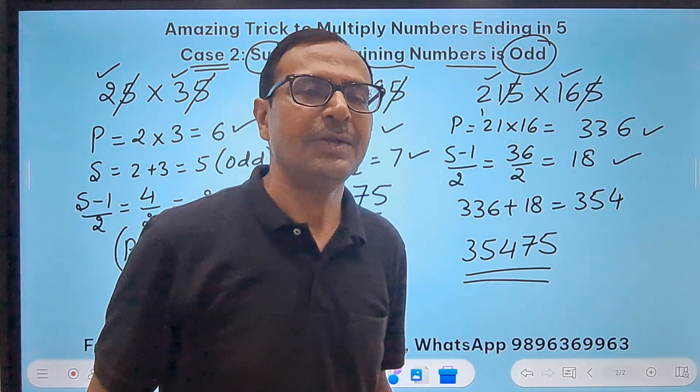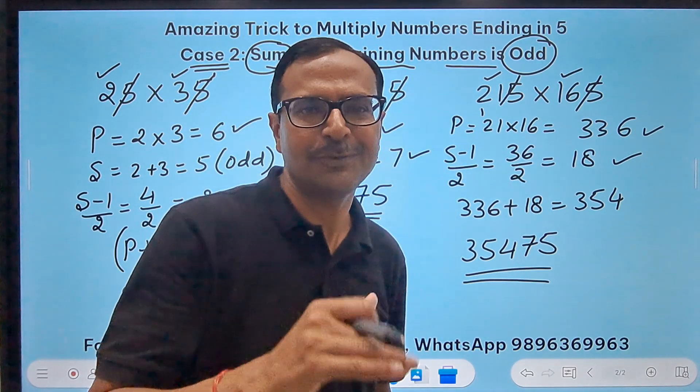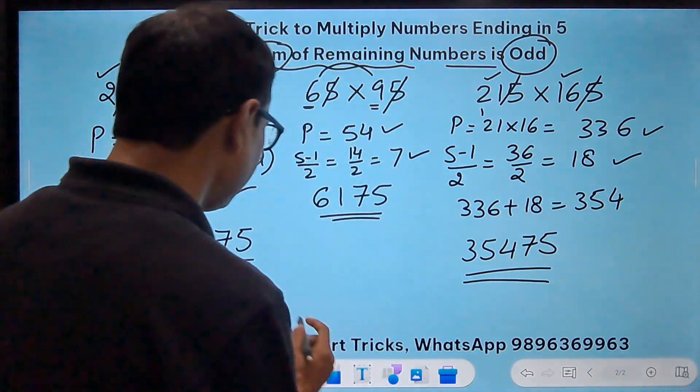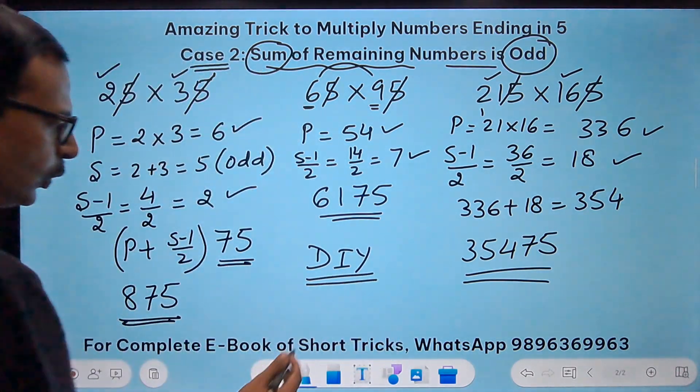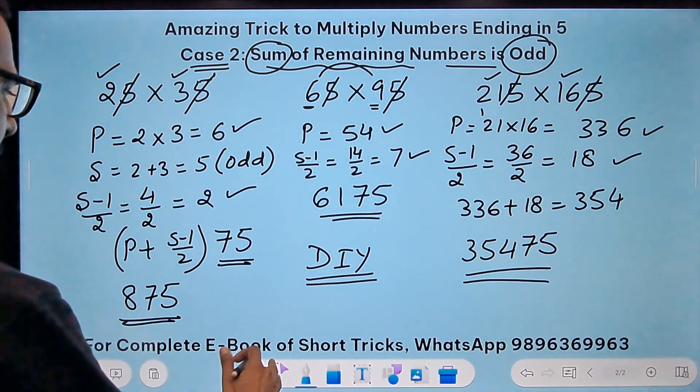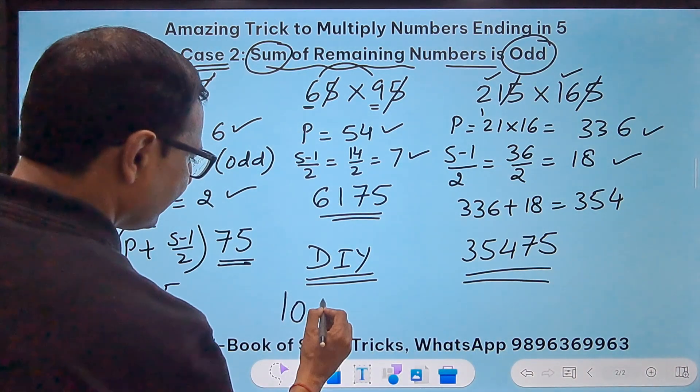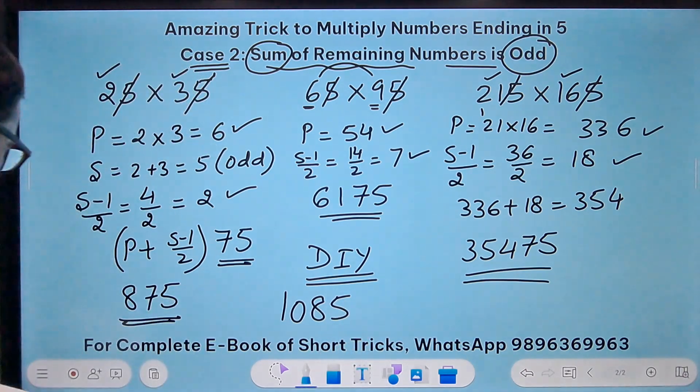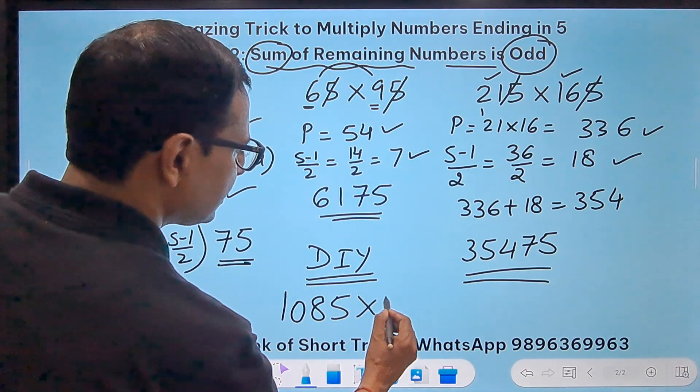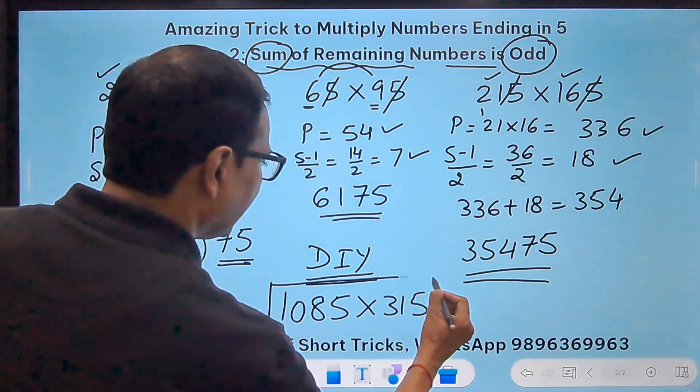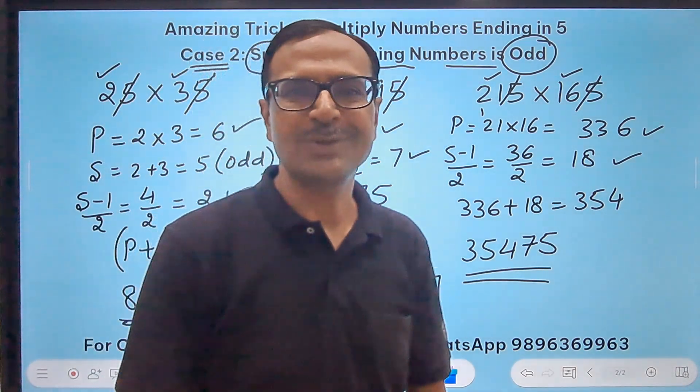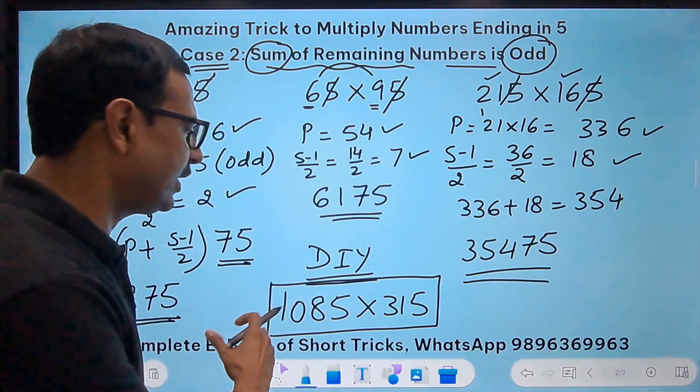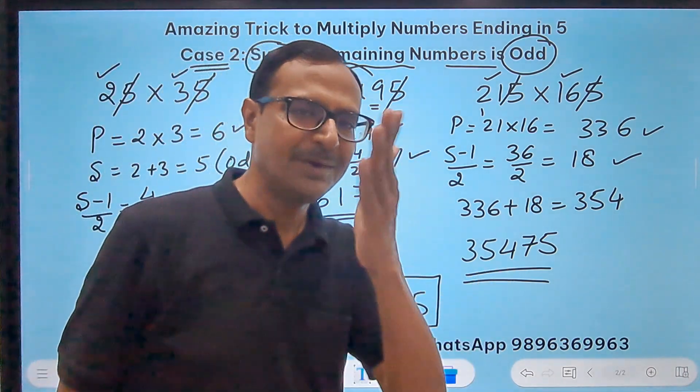Does it work friends? You can let me know in the comments. Now a DIY, do it yourself question. You need to do it using this trick and let me know whether this worked for you or not. You need to do 1085 times 315 using this trick and post your answer and the time taken to get to the correct answer so that I can review it.